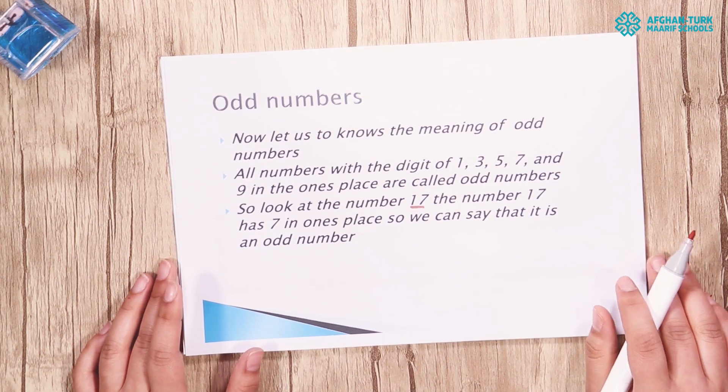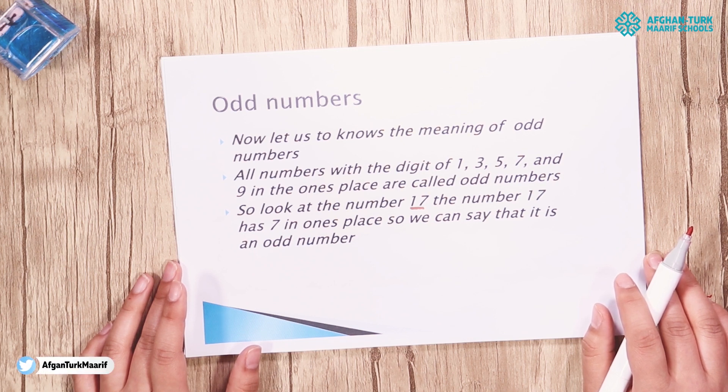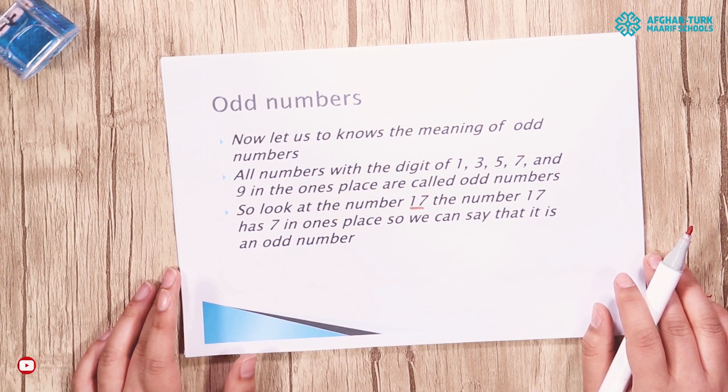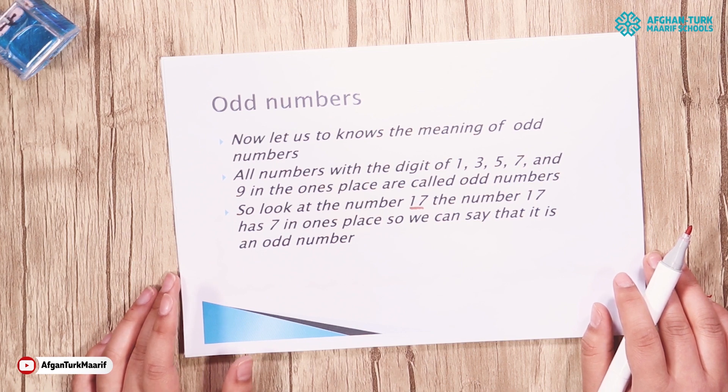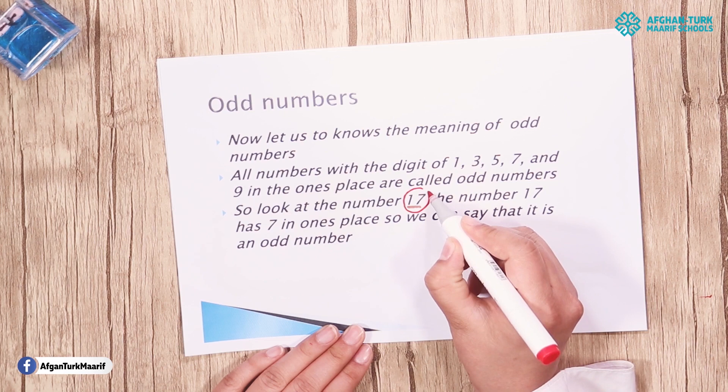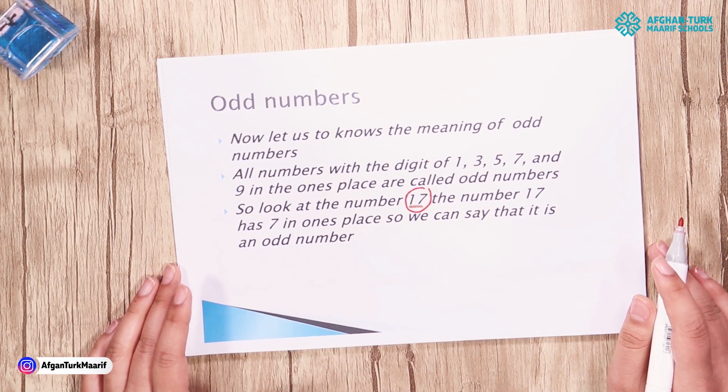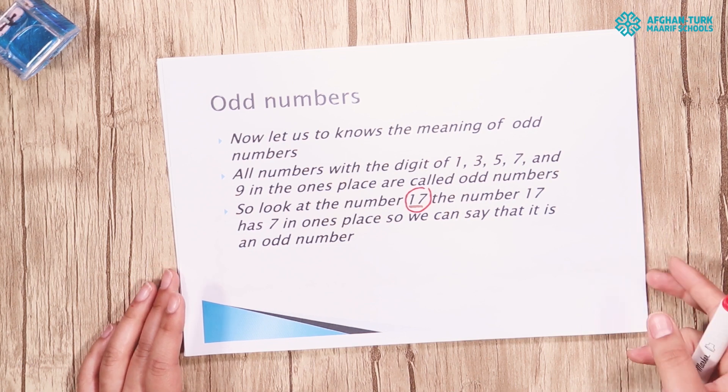And this is the time of odd numbers. All numbers with the digit of 1, 3, 5, 7 and 9 in the ones place are called odd numbers. So look at the number 17. The number 17 has 7 in ones place so we can say that it's an odd number.